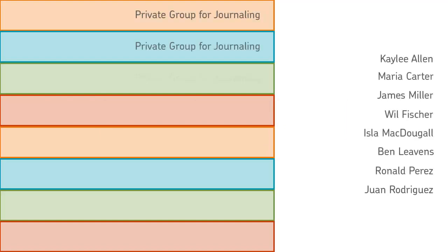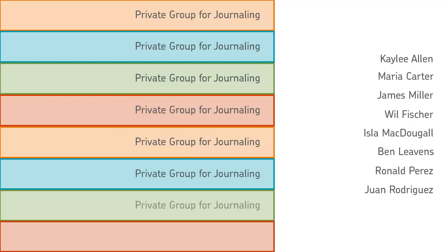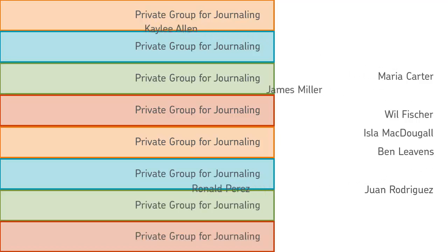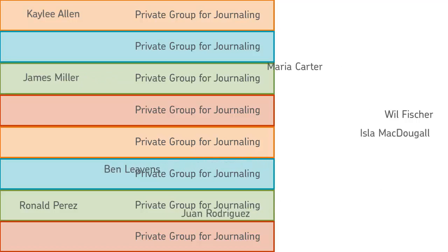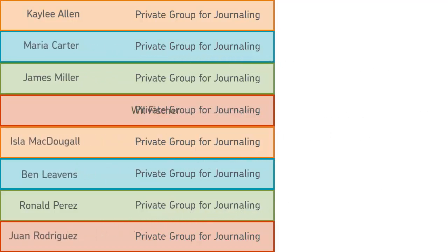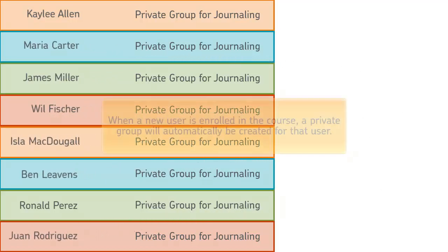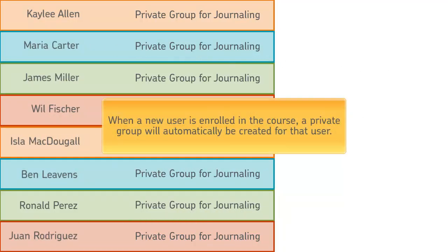For example, your class is doing an individual research project. One of the requirements is that learners keep a journal along the way so you know their project is on track. You choose the 'Single User, Member-Specific Group' type to create a group for each user enrolled in your course. When a new user is enrolled in the course, a private group will automatically be created for that user.